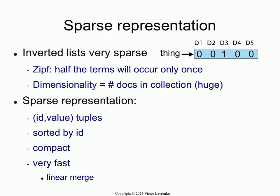So they will look like this. You could store the full vector, but it would become exceedingly wasteful as your collection grows. If your collection is, say, 20 billion documents, then storing a 20 billion long vector full of zeros is wasteful. You don't want to do that — your index would never fit anywhere. It wouldn't fit on a disk.